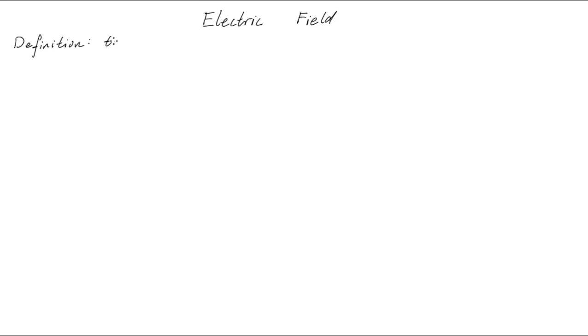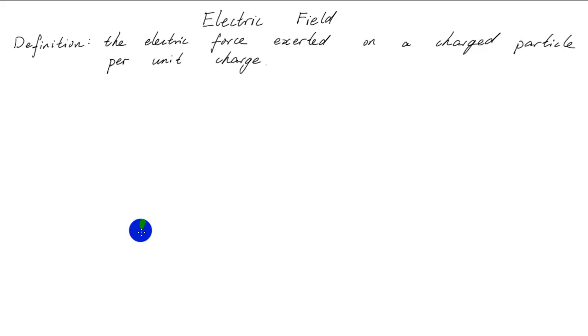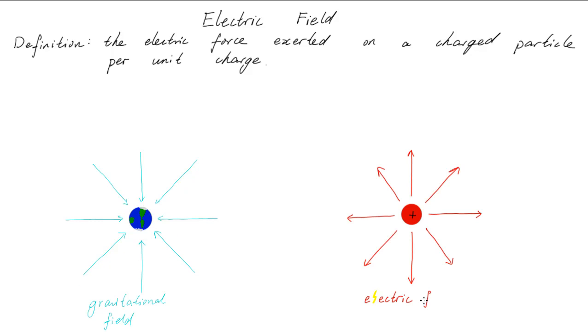The definition of an electric field is the electric force exerted on a charged particle per unit charge. Just like how all objects with mass produce a gravitational field, all particles with charge produce an electric field.